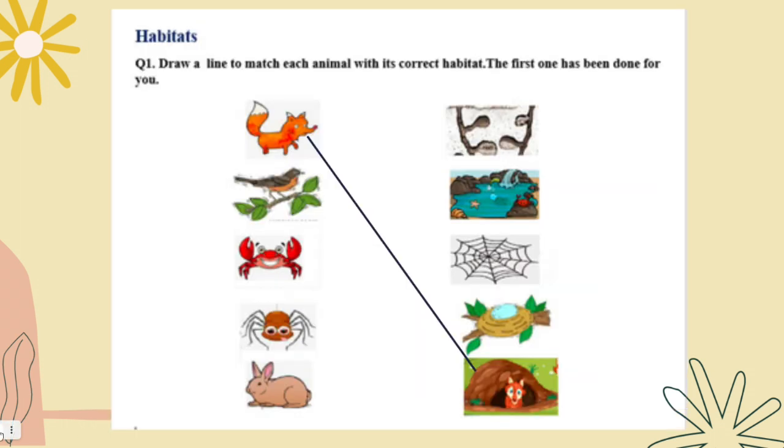Now let's talk about habitat. We will draw a line to match each animal with its correct habitat. Remember habitat is a place where plants and animals live. The first one has been done for you. A meerkat lives in burrow. How about this bird? It lives in a tree because it is very good for their nesting place. At the same time this is where they can hide from predators and inclement weather.